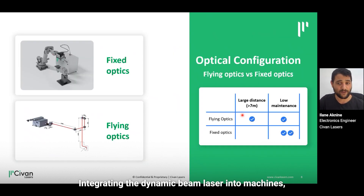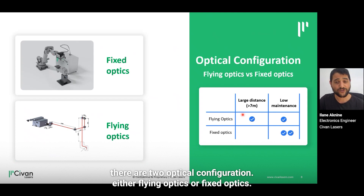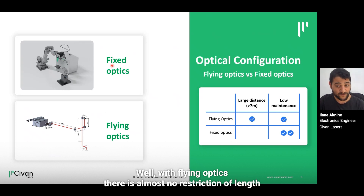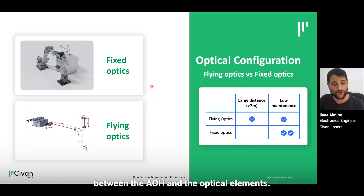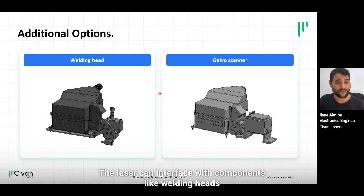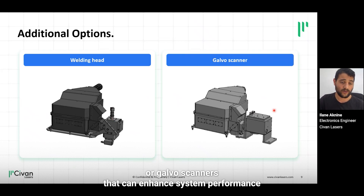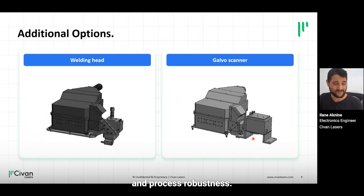When integrating the dynamic beam laser into machines, there are two optical configurations: flying optics or fixed optics. With flying optics, there is almost no restriction on the length between the AOH and the optical elements. The laser can interface with components like welding heads or galvo scanners, which can enhance system performance and process robustness.